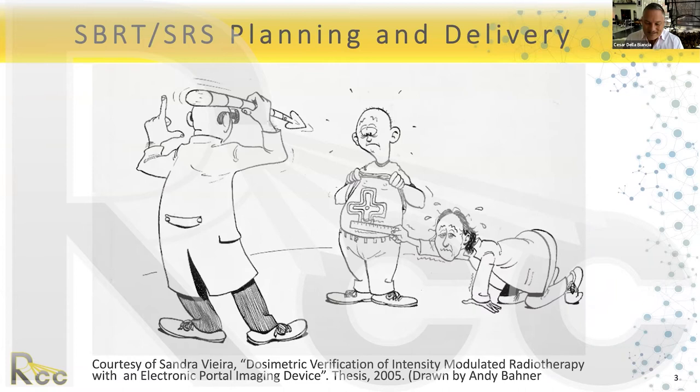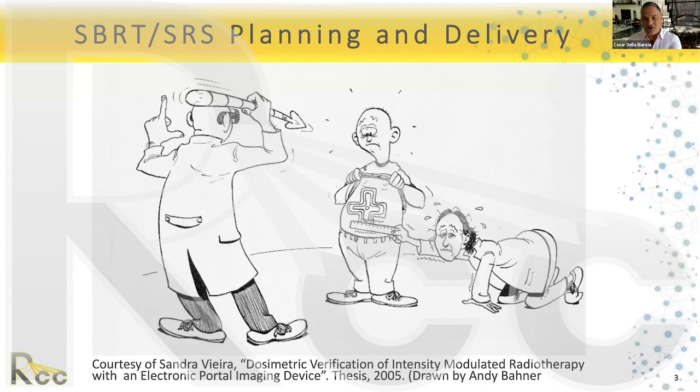I always like to start with this picture. It looks like an SBRT or SRS scene — it's a very precise technique. The physicist with the ruler is measuring, and the physician is ready to shoot the radiation. That's why everyone looks worried, because it's a very precise technique with very high dose and a very small number of fractions — there's no room for imprecision.